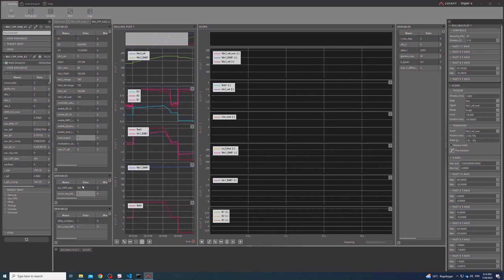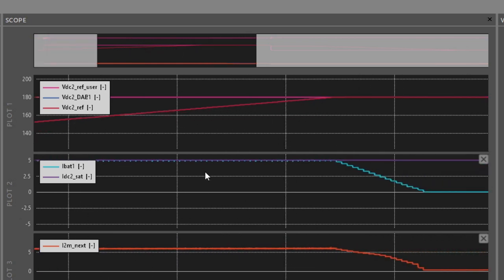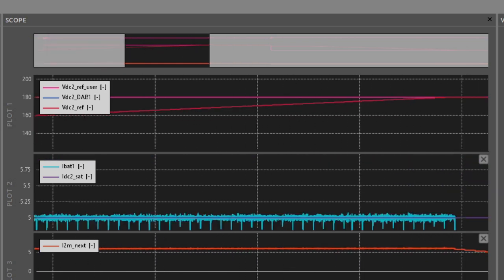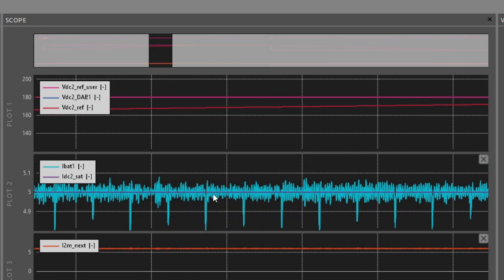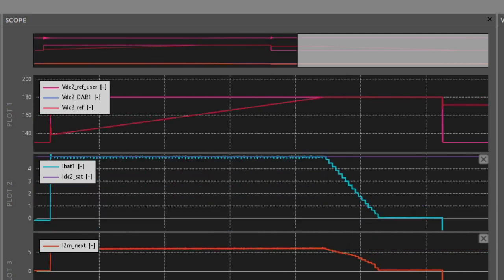In this experiment, a battery charging and discharging process is emulated. Current is limited until the output voltage equals the reference, allowing implementation of a constant current-constant voltage process with model predictive control.